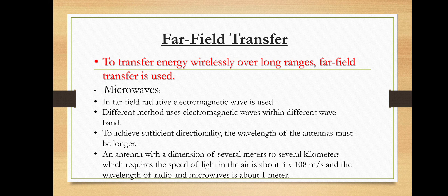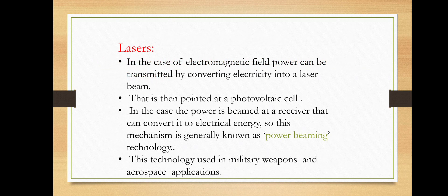In the far-field, radiative electromagnetic waves are used. Different methods use electromagnetic waves within different wave bands. In early times, there were many experiments with radio and microwaves. To achieve sufficient directionality, the wavelength of the antennas must be longer. An antenna with a dimension of several meters to several kilometers is required; the speed of light in air is about 3 × 10⁸ meters per second, and the wavelength of radio and microwaves is about 1 meter. To transfer energy to smaller objects, shorter wavelengths are used, covering the wave bands of radio, TV, cell phone, and Wi-Fi with signal intensity several orders of magnitude larger.